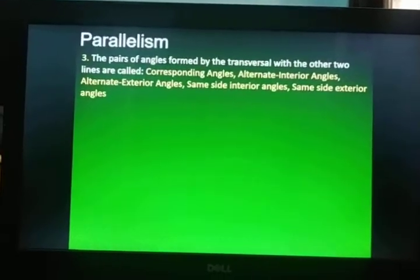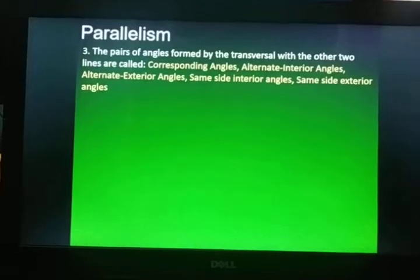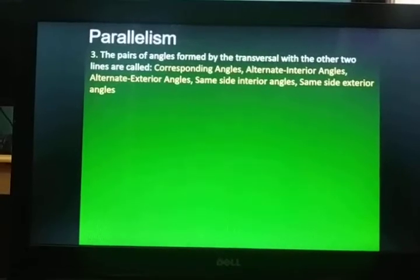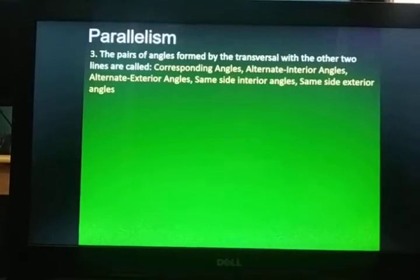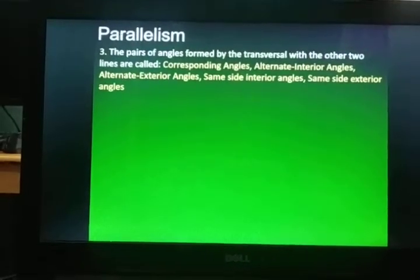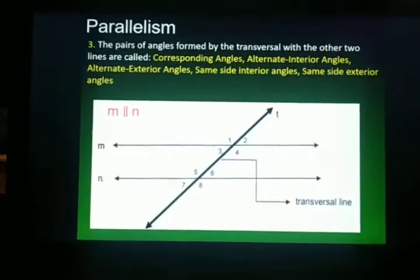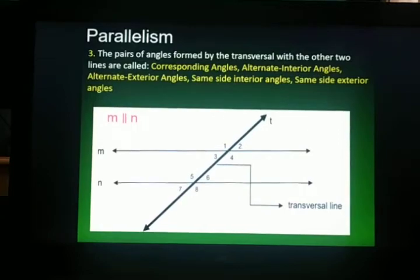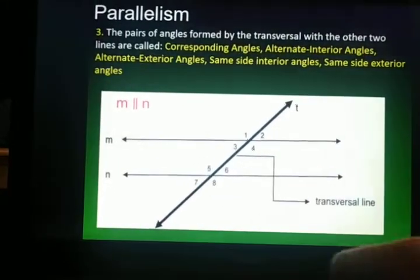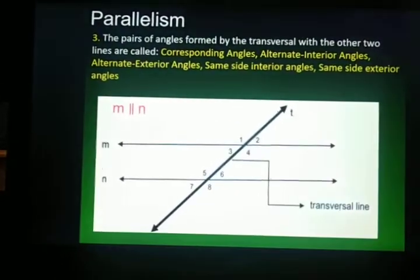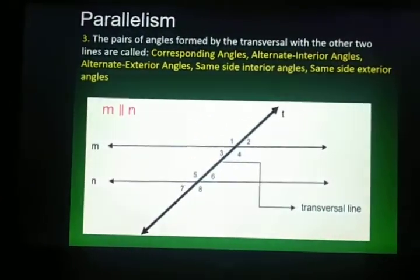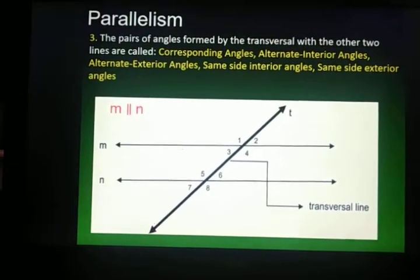The pairs of angles formed by the transversal with the other two lines are also called corresponding angles, alternate interior angles, alternate exterior angles, same side interior angles, and same side exterior angles. Take note that these angles are paired. We have here again line M parallel with line N, cut by transversal T. Corresponding angles are angles 1 and 5, angles 3 and 7, angles 2 and 6, and angles 4 and 8. One is exterior and one is interior in relation to their positions in the parallel lines.